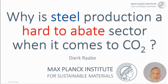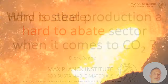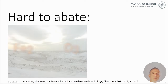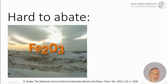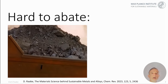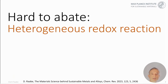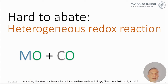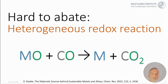Why is steel production a sector considered particularly hard to abate when it comes to avoiding carbon dioxide emissions? The reason is that the way we extract metals from their oxides — typically the mineral form found in ores — proceeds through a series of heterogeneous redox steps. Chemical redox reactions involve a reduction of the oxide or sulfide into the pure metal, and an oxidation step in which the fossil reductant, like carbon monoxide, is oxidized into carbon dioxide. Therefore, the main future scientific and engineering target for most metals is to remove carbon entirely from this type of redox reaction.